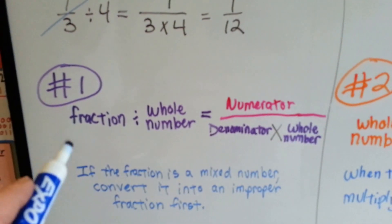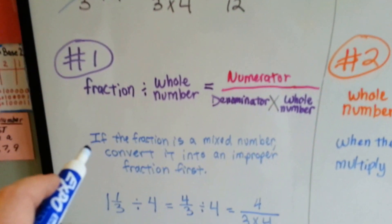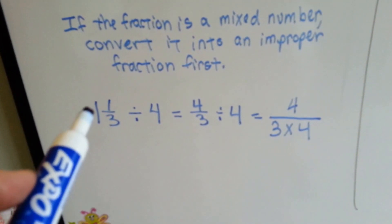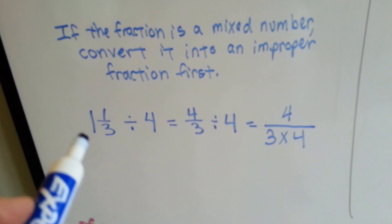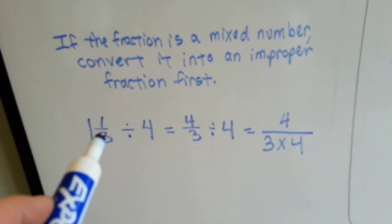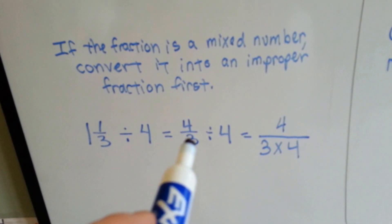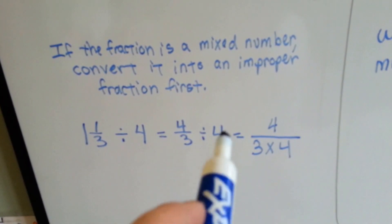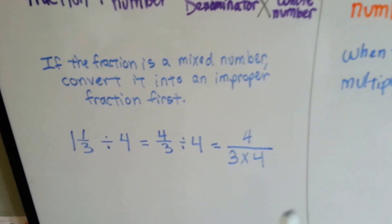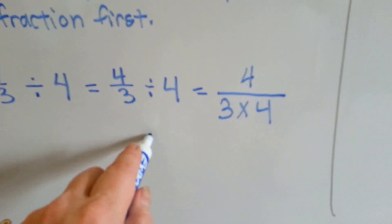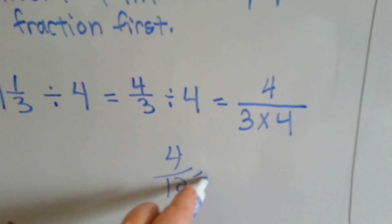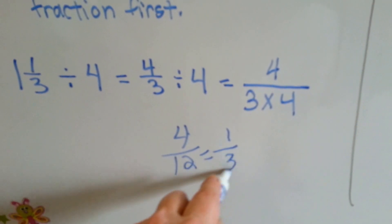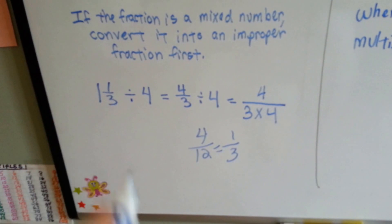This will even work if this is a mixed number. If the fraction is a mixed number, just convert it into an improper fraction first. So if you have 1 and 1 third divided by 4, turn the 1 and 1 third into 4 thirds because 1 times 3 is 3 plus the 1 is 4. So it would be 4 thirds, then do 4 thirds divided by 4. Put the 4 on top as the numerator and put the 3 and the 4 down below. Do your multiplication and you're going to get 4 over 12, which needs to be reduced. How many times can 4 go into 12? One 4 goes into 12 three times and our answer is a third.